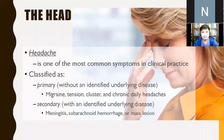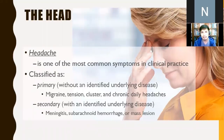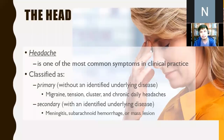Headache is one of the most common symptoms in clinical practice, classified as primary or secondary. Primary headaches have no identified underlying disease — common examples include migraine, tension, and chronic daily headache. Secondary headaches have a reason behind them, such as subarachnoid hemorrhage or meningitis. You always have to think about increased intracranial pressure — there could be leakage, bleeding, or a growing mass impeding circulation, causing a buildup of pressure.